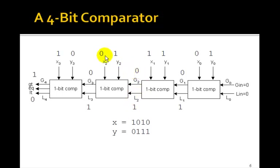Now x2 is less than y2, so l3 is going to be 1 because of that. And finally, x3 is greater than y3. 1 is greater than 0. So that's going to force g4 and therefore greater than to be 1. So that's how it works.